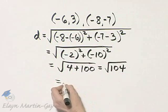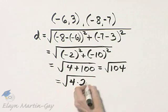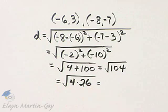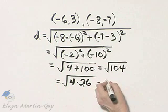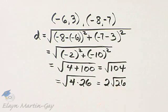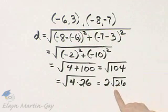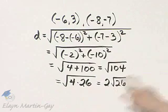Let's go ahead and simplify that because 104 is 4 times 26, and the square root of 4 is 2, so that's 2 square root of 26. The distance between these two points, then, is exactly 2 square root of 26 units.